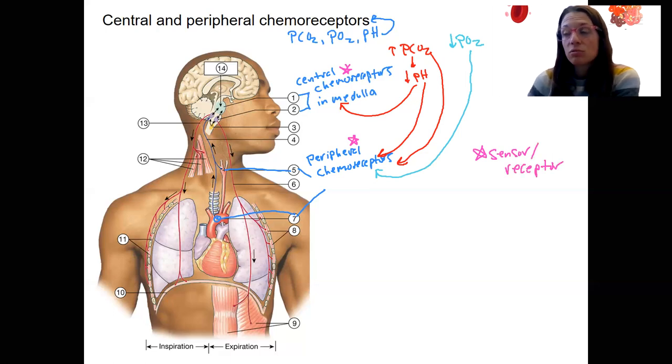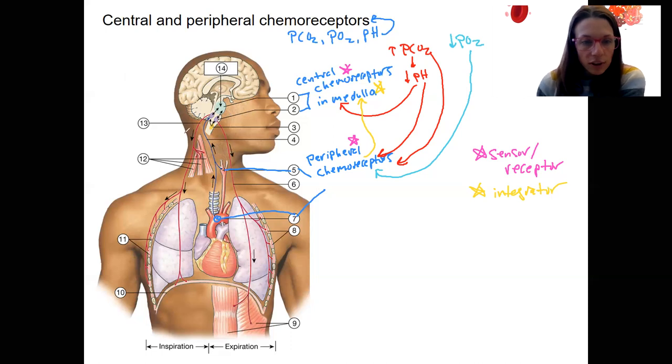Our integrator is, regardless of where the sensor was, our integrator is going to be the medulla. The control region. So it may be that these receptors send an afferent signal, a neural signal, to the medulla from the periphery. So regardless of how the information gets to the medulla, the medulla is the integrator, makes that decision about whether to send an output signal via these nerves that travel to the diaphragm.